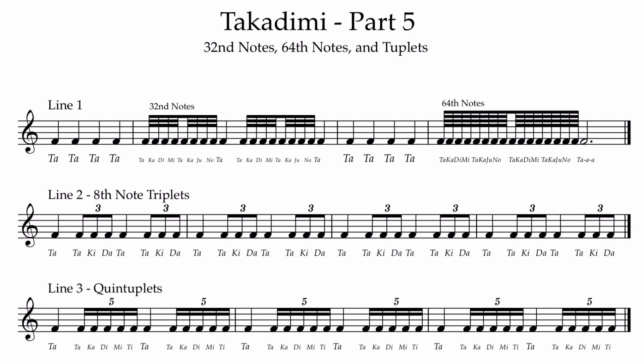'Takadimi' is the first grouping of four, and 'takajuno' is that second grouping of four. When you put them together, it does roll off the tongue fairly easily: takadimi takajuno ta. It's a group of eight notes — not eighth notes, a group of eight notes. Because when we look over to 64th notes, you're going to see it's two groupings of eight notes. You just say 'takadimi takajuno' really fast two times: takadimi takajuno, takadimi takajuno ta. So 32nd notes and 64th notes are breakdowns of 'takadimi takajuno' and 'takadimi takajuno, takadimi takajuno.'